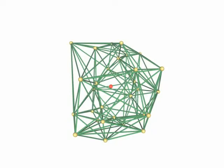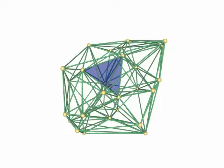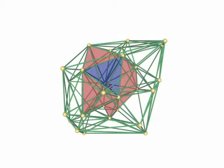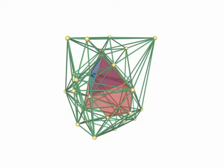We want to add this point. At first we have to find the cell it is located in. Then we have to identify all cells that are in conflict with the point, that is whose circumspheres contain the point.